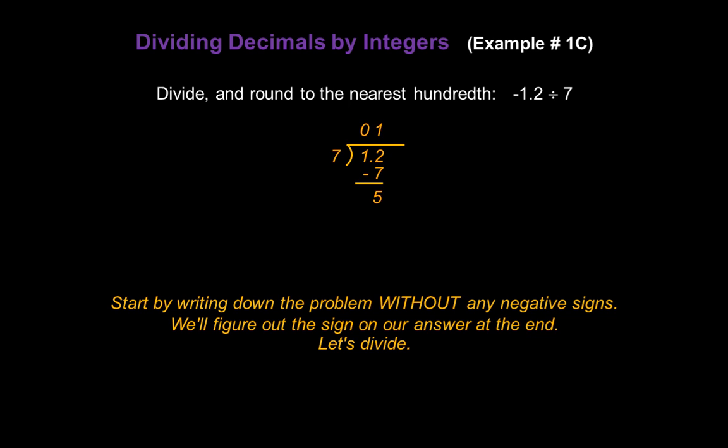Now we need to keep dividing because we want to go to the nearest hundredth, so we can't stop right now. Let's add a 0 after the 2, bring that down to our remainder of 5 and make that a 50. How many times does 7 go into 50? 7 times. 7 times 7 is 49, and we end up with a remainder of 1.